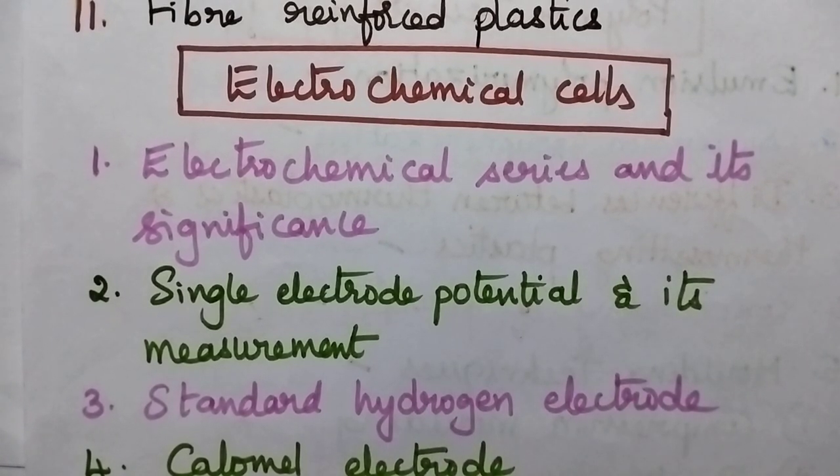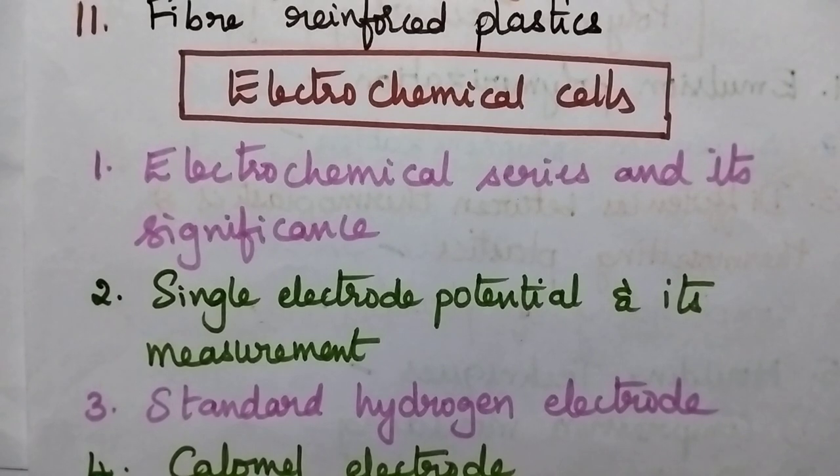Moving to electrochemical cells, it includes electrochemical series and its significance, single electrode potential and its measurement, standard hydrogen electrode, calomel electrode,